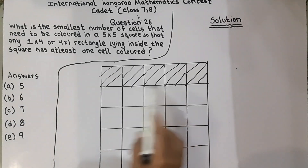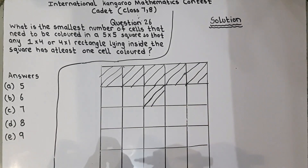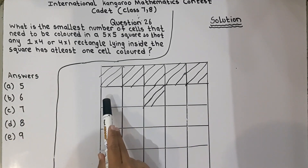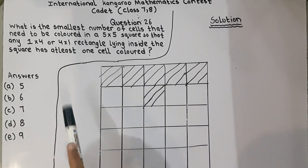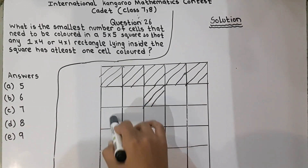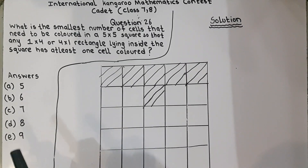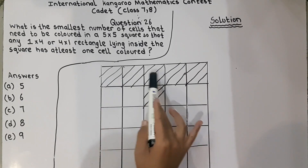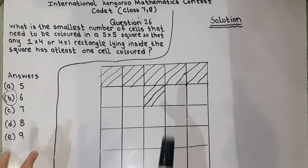Now we will try 6. We had shaded 5 boxes and we will just shade 1 more box. Checking again — a 1x4 rectangle has 1 box colored, so that segment is correct. And in the 4x1 rectangle, 1 cell is also colored. So we have solved the question — the answer is 6 boxes colored, and we circle option B because it contains 6.